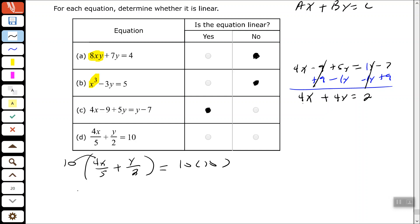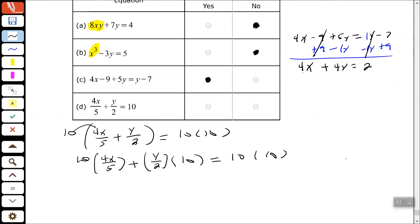So, distributive property, let's go ahead and write this out, 4x over 5 plus y over 2 times 10 equals 10 over 10. So, I just wrote out my distributive property.